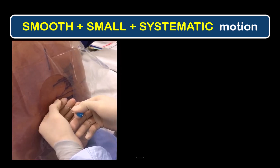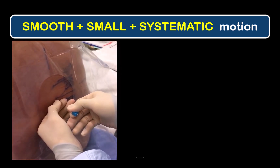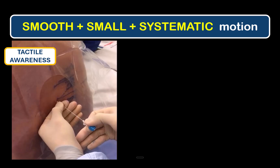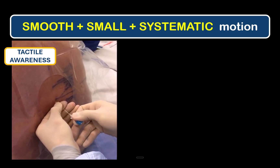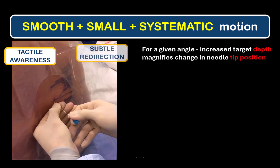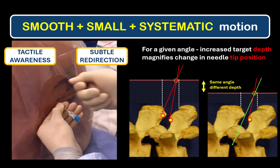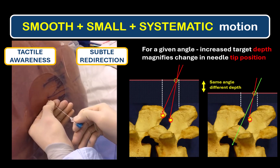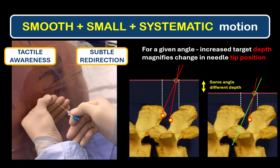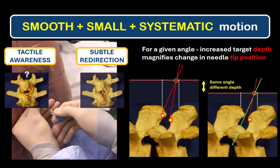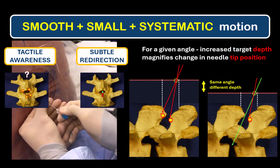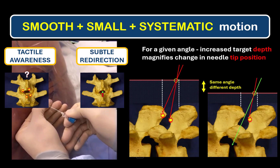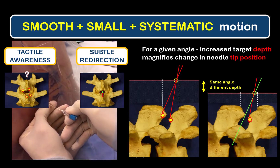Needle movements should also be smooth, small, and systematic. Smooth is about focusing on feel — that tactile sense we talked about — being delicate yet controlled, in other words, having some finesse. Changes in angulation must be small, as these can translate into significantly large displacements in needle tip location, which will be magnified by increased depth to the target, as in an obese patient and when we're using longer needles. And we've already talked about the importance of systematic redirections based on tactile feedback and your mental model of the spine. Don't just dig around haphazardly — consider what part of the vertebrae you're contacting, and adjust your trajectory accordingly, constantly updating your mental map.